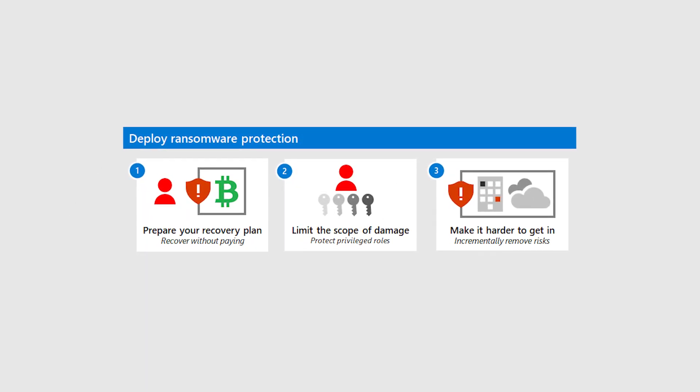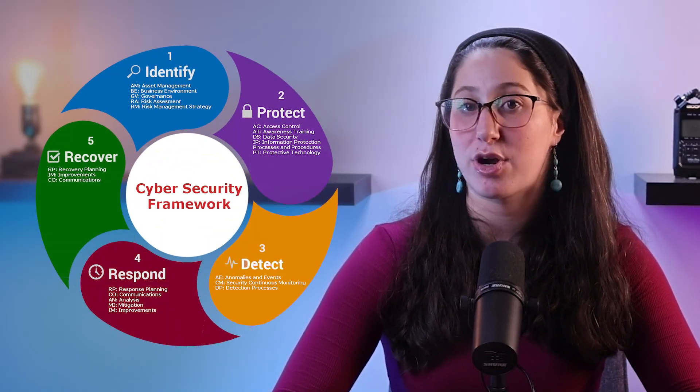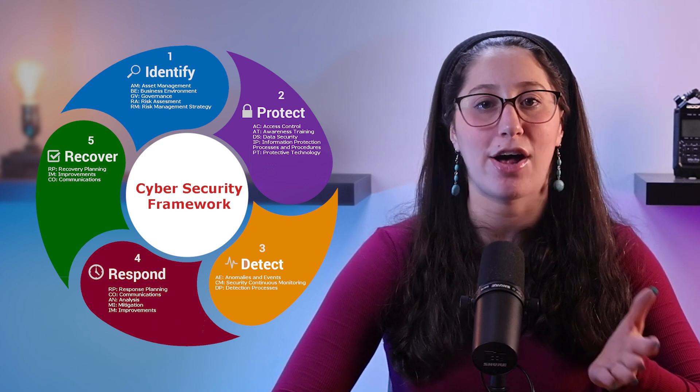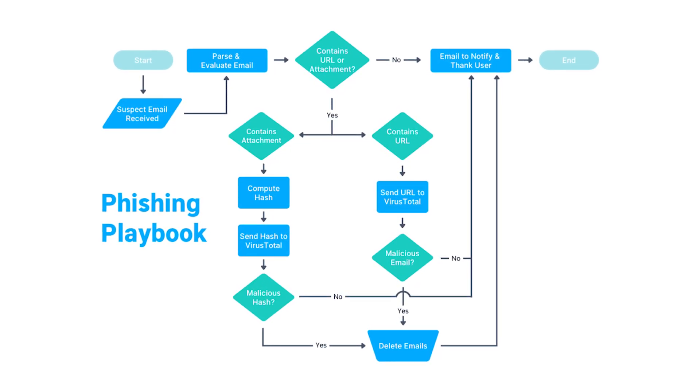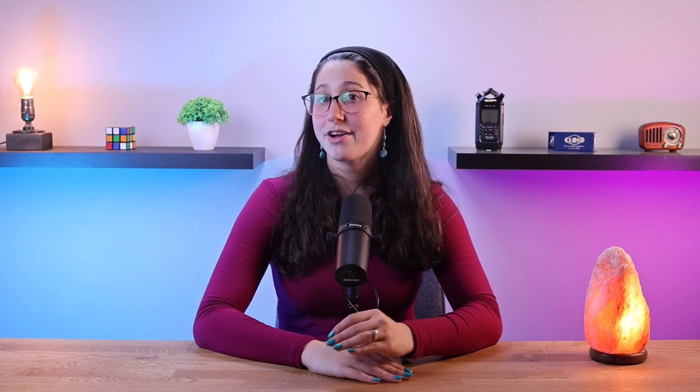Moving on to the fourth method, we have ransomware governance. Establishing and enforcing ransomware governance policies is important for creating a solid cybersecurity framework. This involves defining and implementing a set of rules and procedures that govern how the organization handles and responds to ransomware threats. Policies may include guidelines for incident response, communication protocols during an attack, and escalation procedures. Regularly updating and testing these policies ensures the organization is well prepared to respond effectively, minimizing downtime and potential data loss.